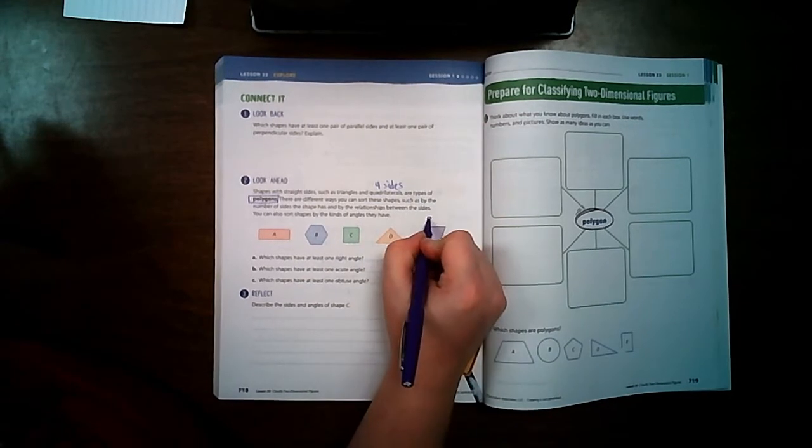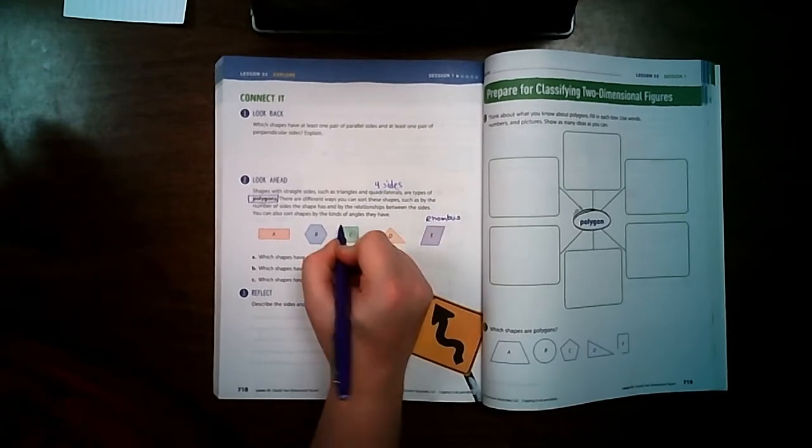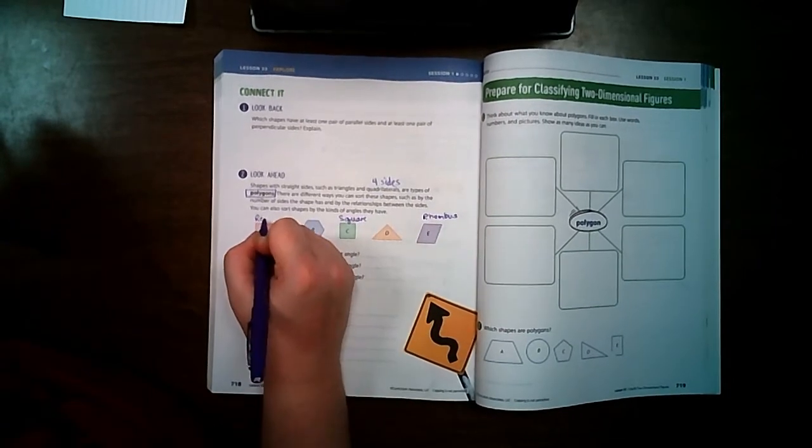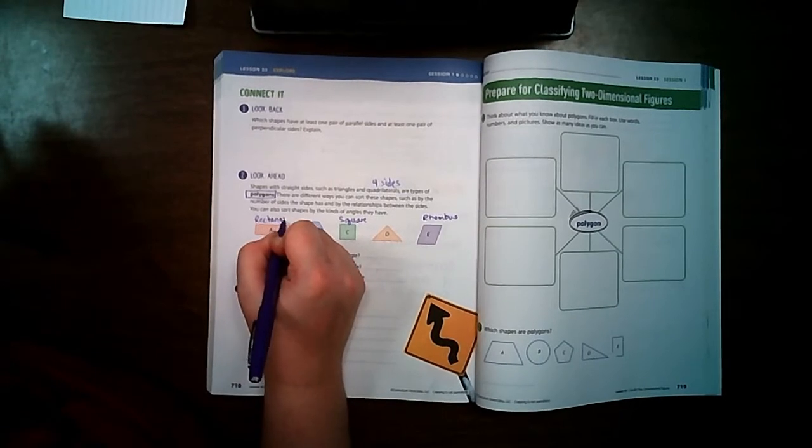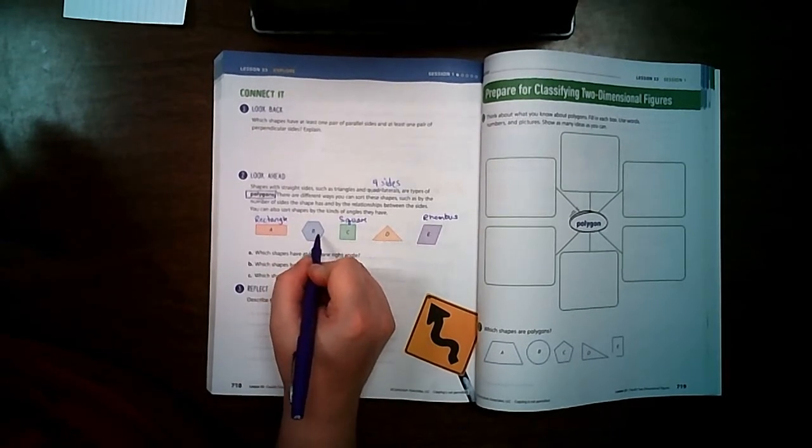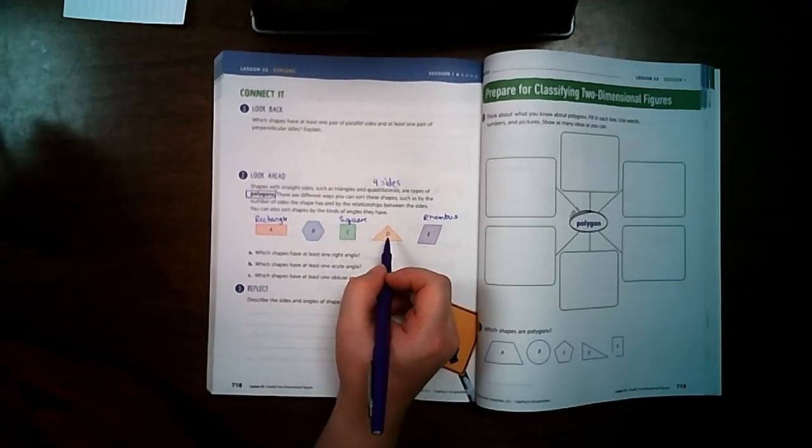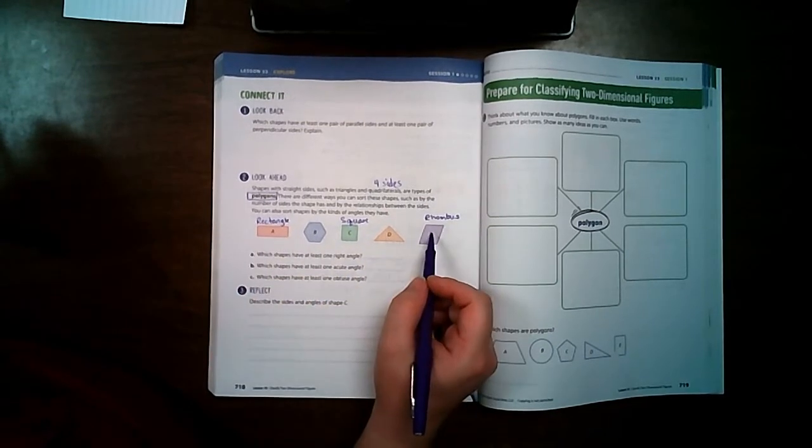Like this is a rhombus, this is a square, and this is a rectangle. But this is not a quadrilateral because it has more than four sides and this is not a quadrilateral because it has three. But all of them are polygons.